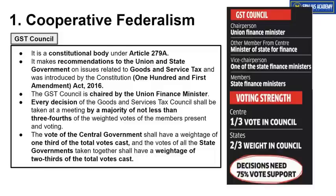The GST Council's main work is to make recommendations to the union and state governments on different issues regarding Goods and Services Tax. Different items have different tax rates under five tax slabs: zero percent, five percent, twelve percent, eighteen percent, and twenty-eight percent. The decision about which tax slab an item falls under is mainly taken by the GST Council, which was introduced through the 101st Amendment Act of 2016.